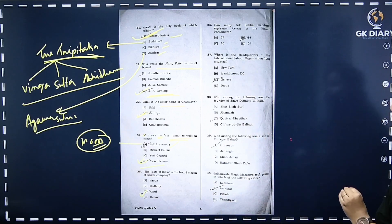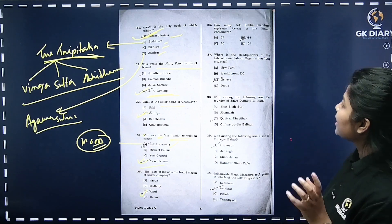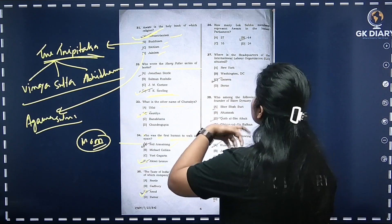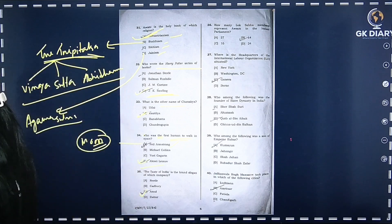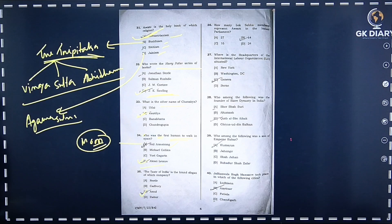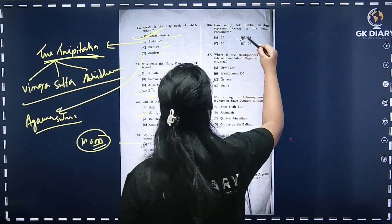How many Lok Sabha members represent Assam in the Indian Parliament? The correct option is B.